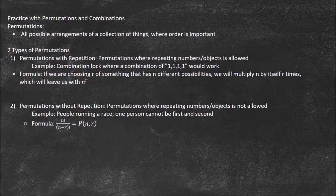Permutations are all possible arrangements of a collection of things where order is important. With combinations, the order doesn't matter. We're just figuring out how many groups can we get these items into. There's two types of permutations and two types of combinations.